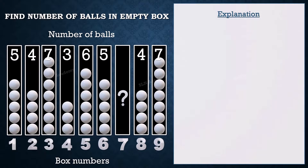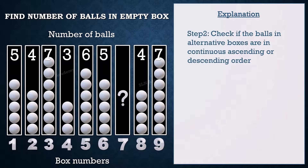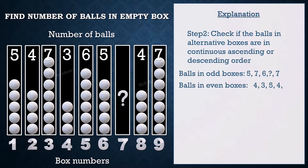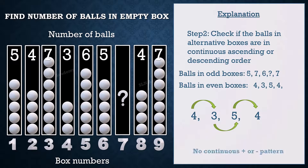Step 2: Check if the balls in alternative boxes are in continuous ascending or descending order. Let us observe the pattern in even boxes first, because there is no missing number there. It seems that there is no continuous positive or negative pattern here as well.